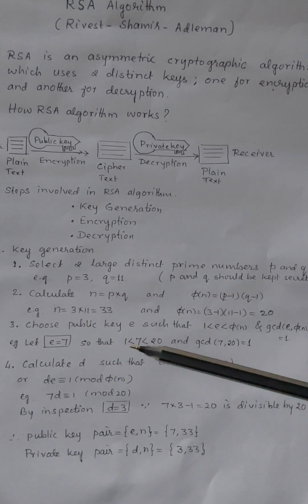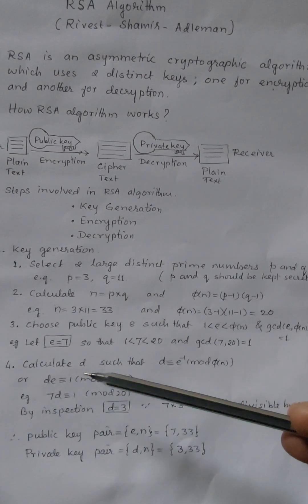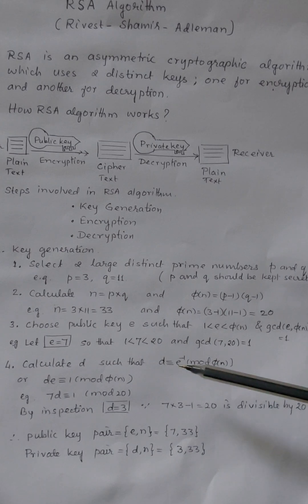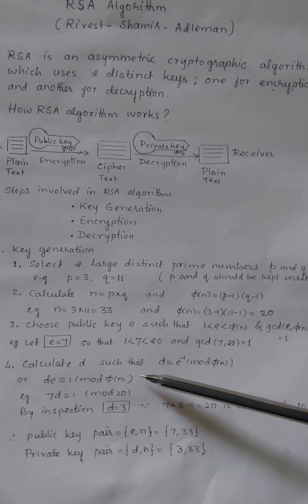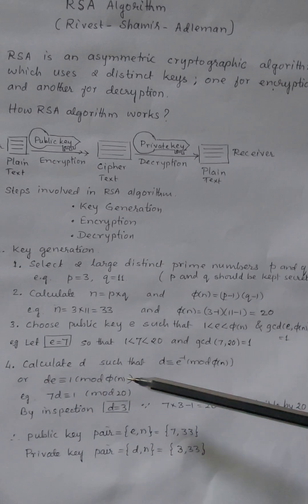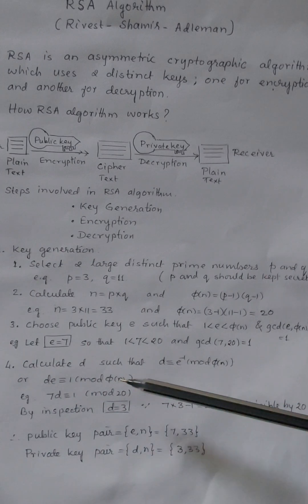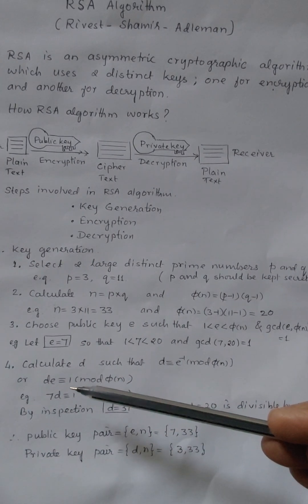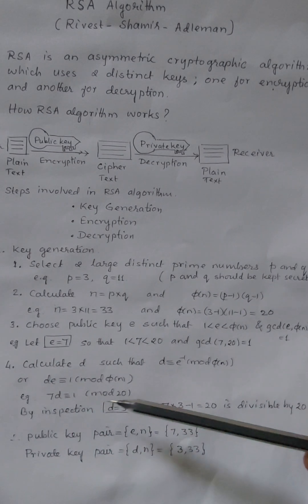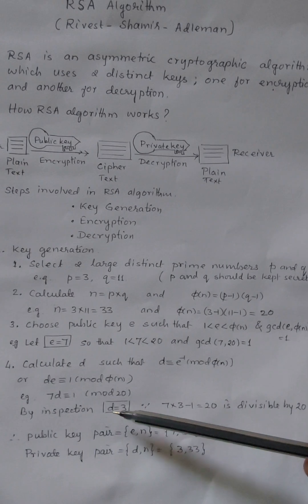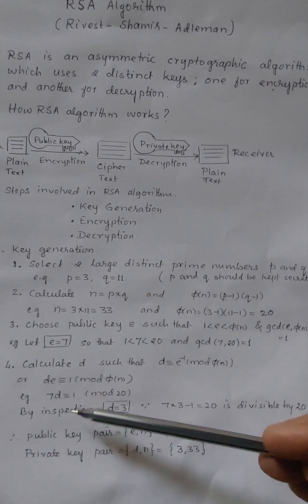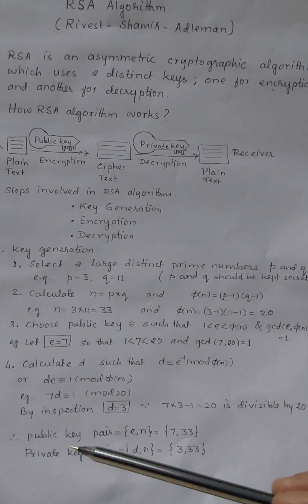Next we calculate the private key D, which is used for decryption. D should be the modular inverse of E mod phi(n), meaning D·E ≡ 1 (mod phi(n)) — that is, when D×E is divided by phi(n), it leaves remainder 1. In our case, E is 7, so 7D ≡ 1 (mod 20). By inspection, D can be taken as 3, because 7 × 3 = 21, and 21 divided by 20 leaves remainder 1.